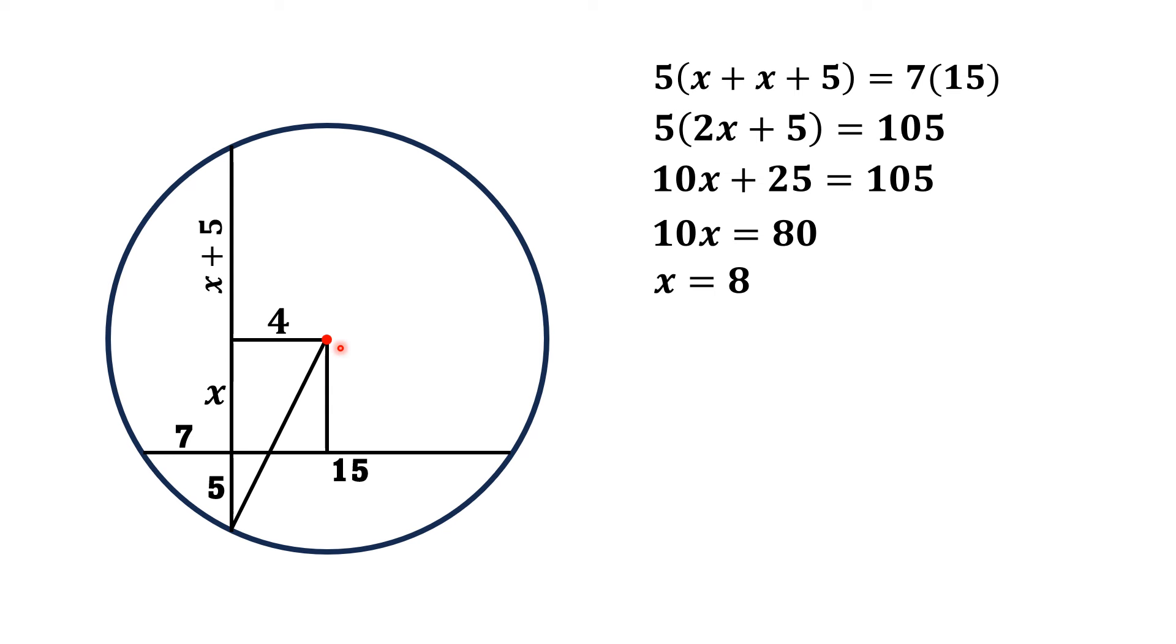Now we draw a line segment from the center of the circle to a point on the circle, which is the radius r. This blue shaded area is a triangle having hypotenuse r, one leg is 4, and the other is x plus 5, that is 13. By using Pythagorean theorem, r² equals 13² plus 4². Substituting the values, 13² is 169 and 4² is 16, so r² equals 185.